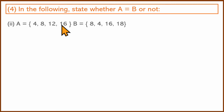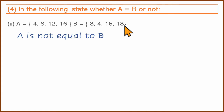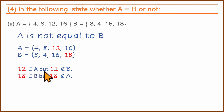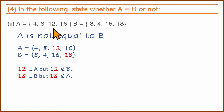A equals {4, 8, 12, 16} and B equals {8, 4, 16, 18}. If you look at it: A has 4, 8, 12, 16 and B has 4, 8, 16, 18. If you observe — 12 belongs to A but 12 does not belong to B. 18 belongs to B but 18 does not belong to A. So these sets are not equal — the elements do not match.